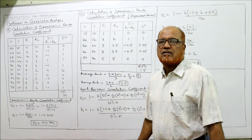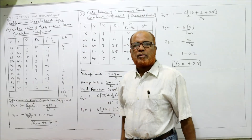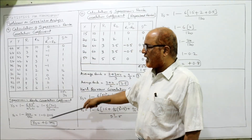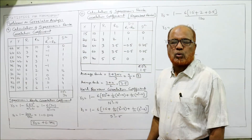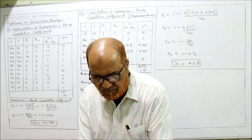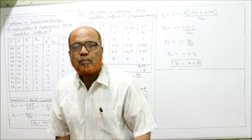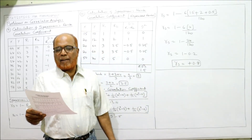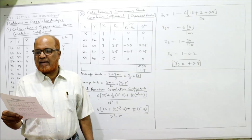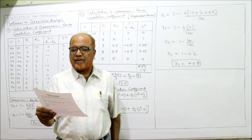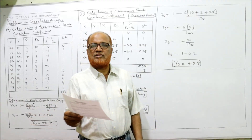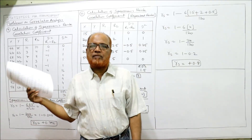The new point in this problem is that ranks were not given — we assigned the ranks and calculated the rank correlation coefficient as 0.794. Now the last and final problem, the tenth one: apply the rank method to find out correlation between X and Y. Here also data is given and we have to assign the ranks, just like the previous problem.